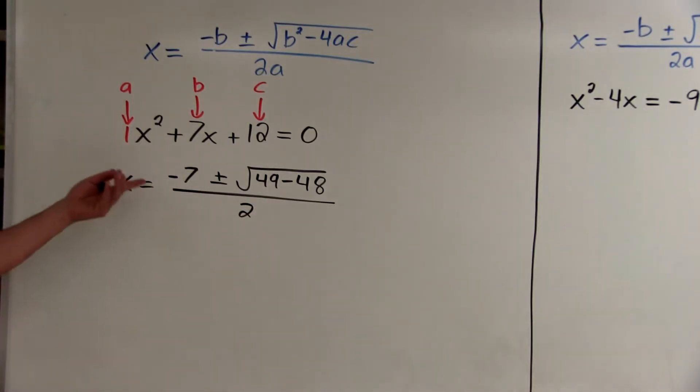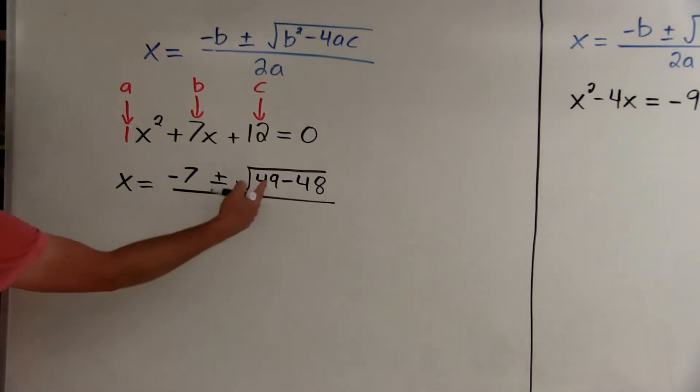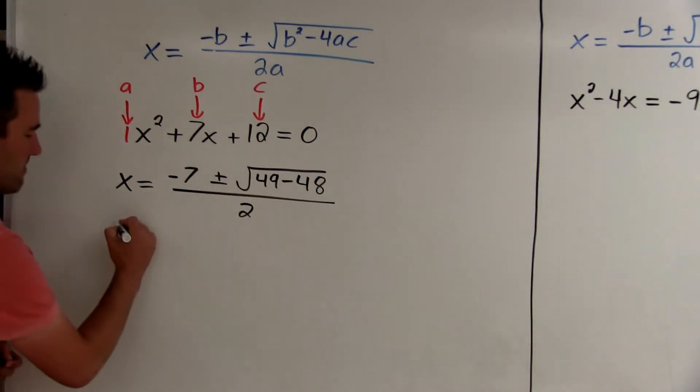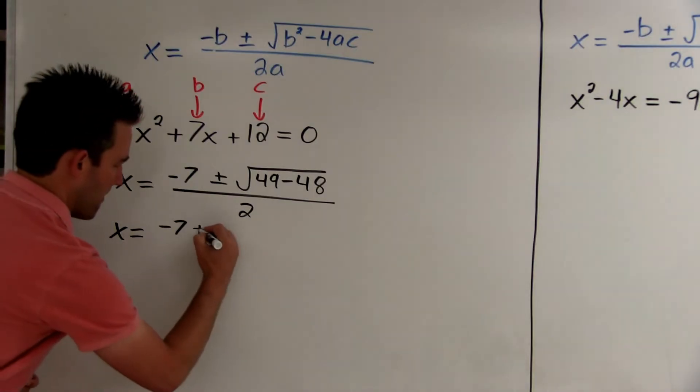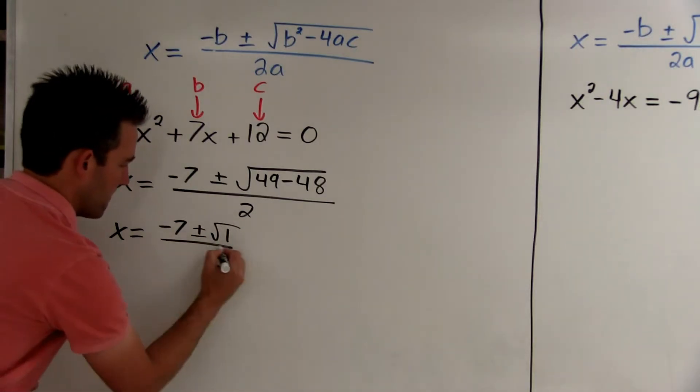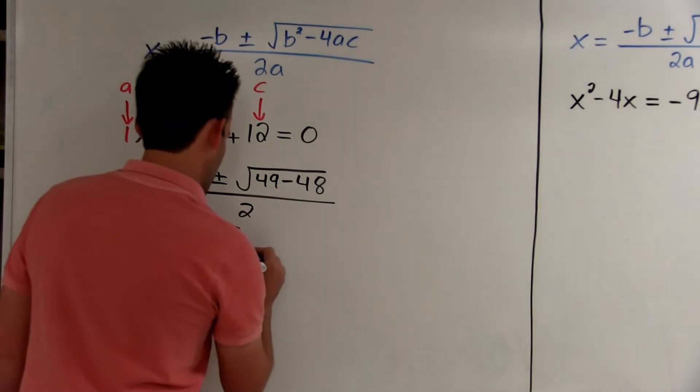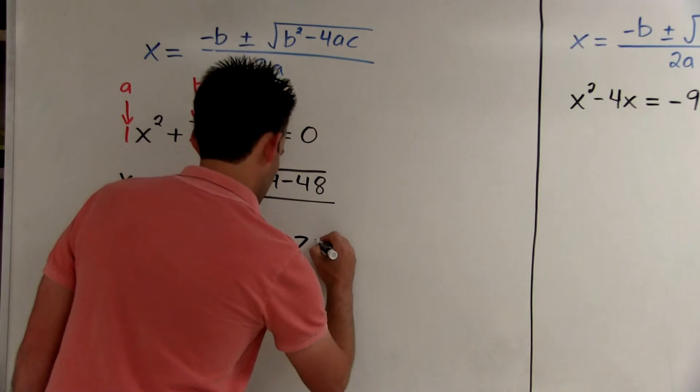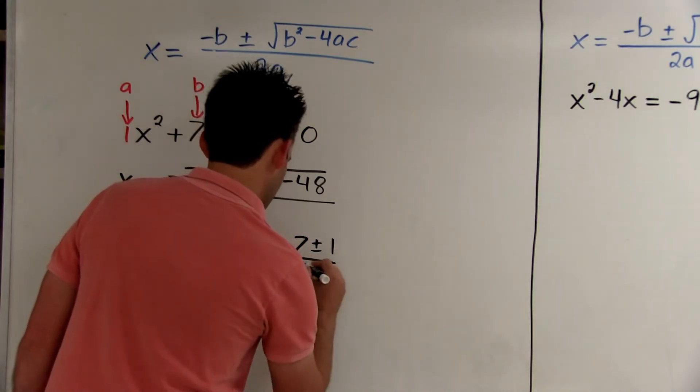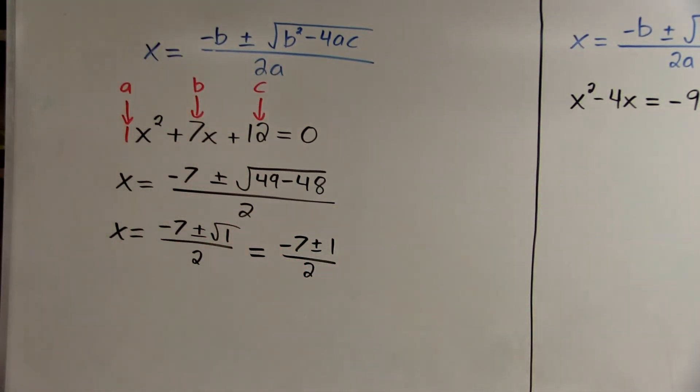That's actually our solution. We just need to simplify it. So 49 minus 48 is 1. And since the square root of 1 is just 1, we can get rid of the square root sign.